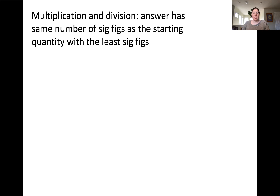When performing calculations with different measurements, we need to consider two major rules. One applies to multiplication and division, which we'll discuss first, and the other applies to addition and subtraction. If you have multiple operations, such as multiplication and addition, you'll follow both rules following the order of operations — always starting with multiplication and division first, then addition and subtraction.